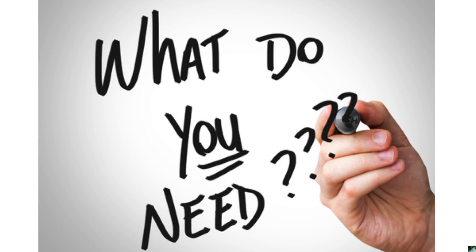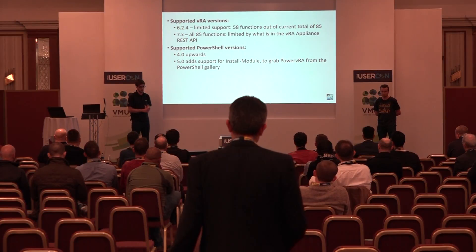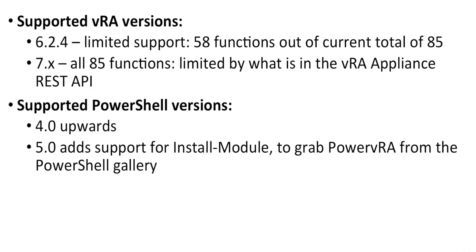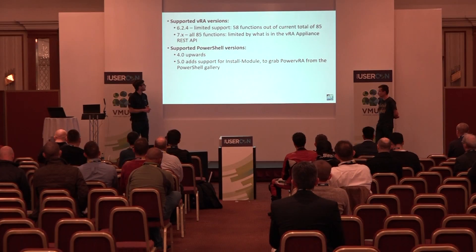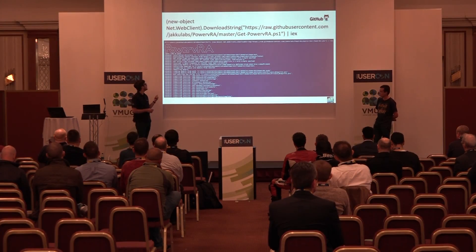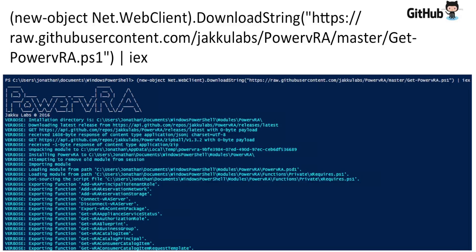So what do you need? At the moment we support VRA 6.2.4, 7.0, 7.0.1, and with module version 1.4 we'll be supporting 7.1 as well for network profiles. PowerShell 4 and upwards. PowerShell 5 will add support for the PowerShell gallery and install module, so running it is pretty simple — just install-module PowerVRA and then it's done. If you don't have PowerShell 5, you can use a one-liner on our GitHub readme which will pull down the latest version from the repo, or you can just do git clone and import it manually.